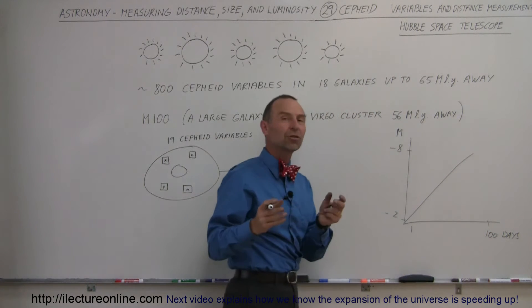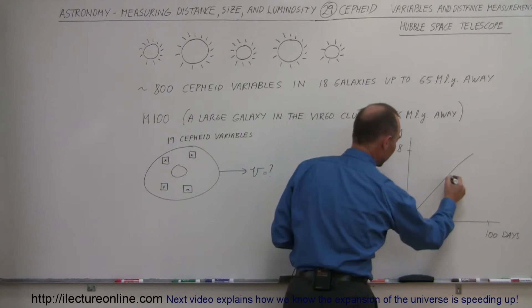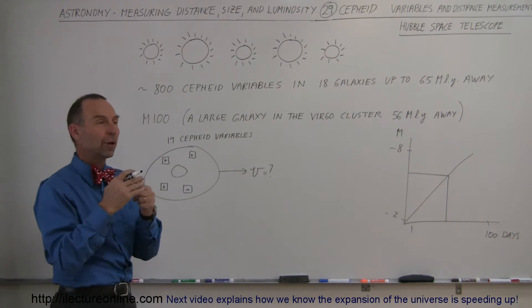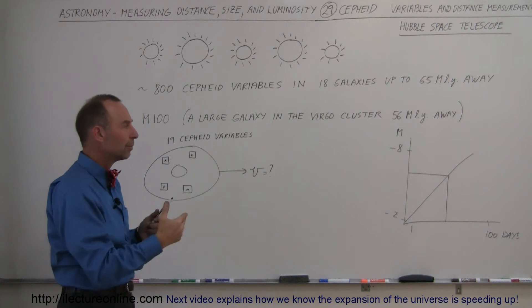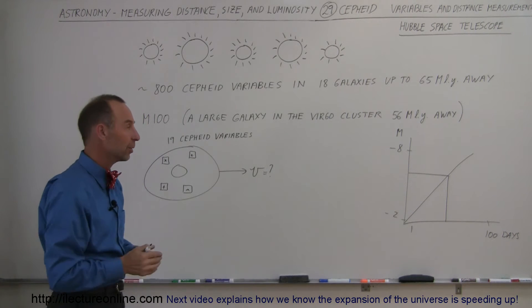So all we had to do was measure the periodicity of the Cepheid variable, put it on the graph, and read off how bright they were. Then we measure their apparent brightness, compare it to their absolute brightness, and from that we can figure out the distance to the Cepheid variables.